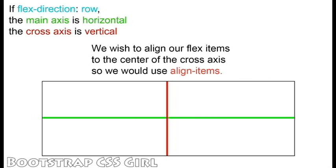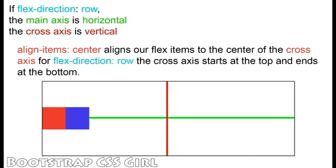Our FlexDirection is set to Row, and we would like to align our FlexItems to the center of our container vertically, so we will use the AlignItems property. To align our FlexItems to the center vertically, we set AlignItems to Center. This moves our FlexItems to the center of our cross-axis. With FlexDirection set to Row, the cross-axis is our vertical axis.